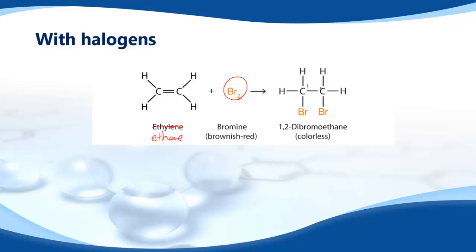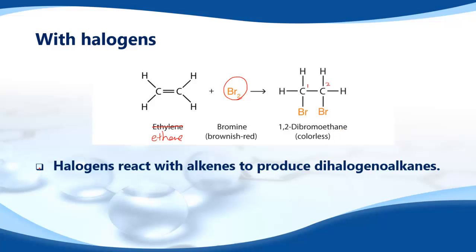So this is called 1,2, because we number the carbons, 1, 2, dibromoethane. So halogens react with alkenes to produce dihalogeno alkenes, which is that there.